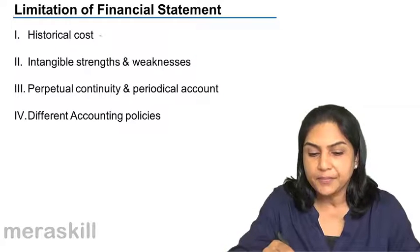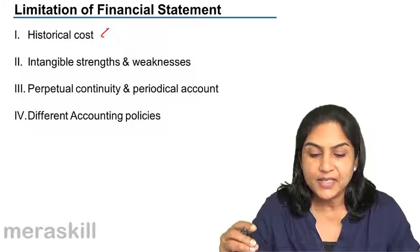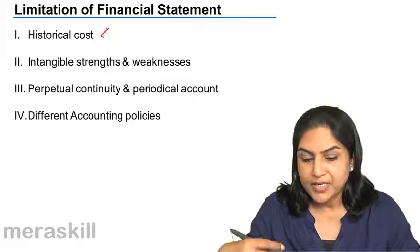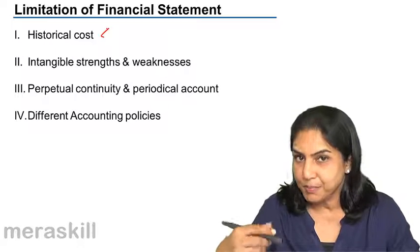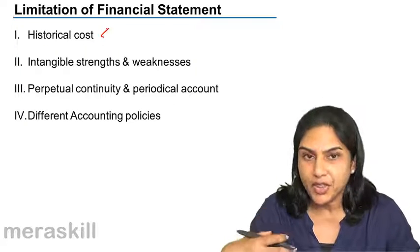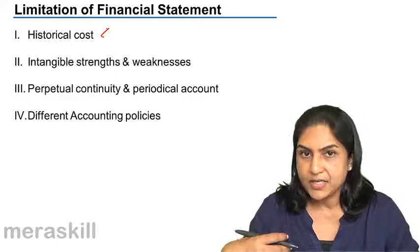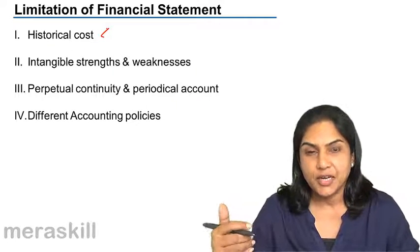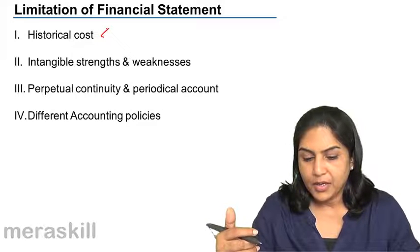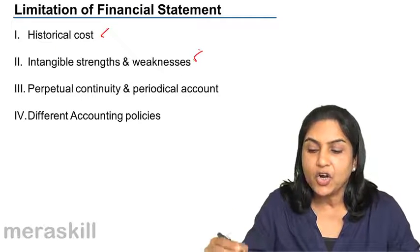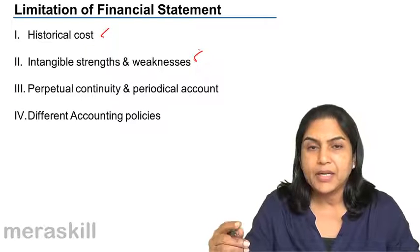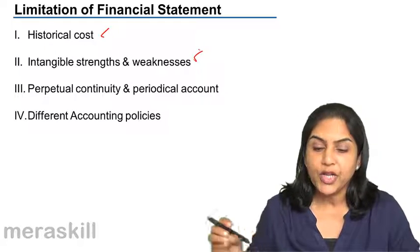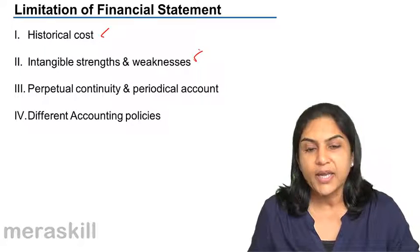Another drawback of financial statements is that they consider only transactions which can be valued in terms of money. Sometimes in an organization, the biggest assets are its people. But the strength of the people, the strength and competence of the management, are not reflected in the financial statements. That is why there is a new area called human resource accounting. Usually, financial statements are prepared on a historical basis and only those transactions which can be measured in terms of money are considered.